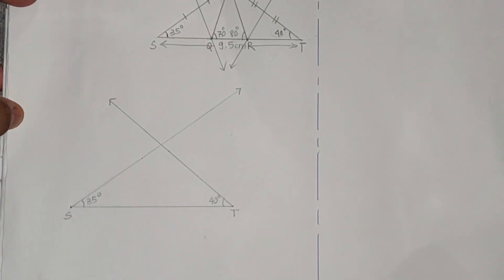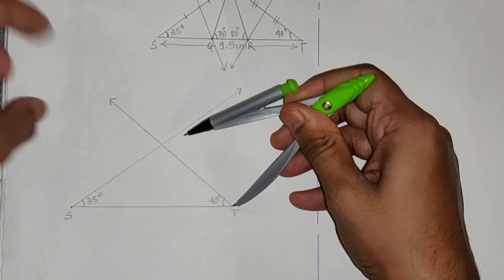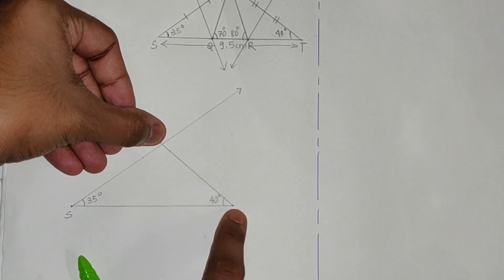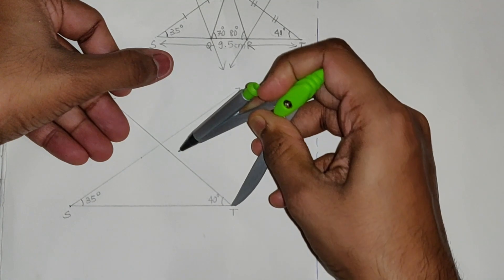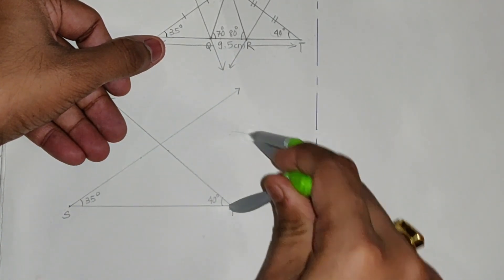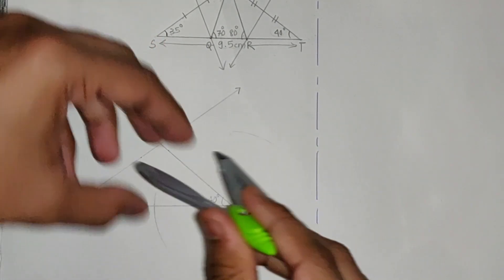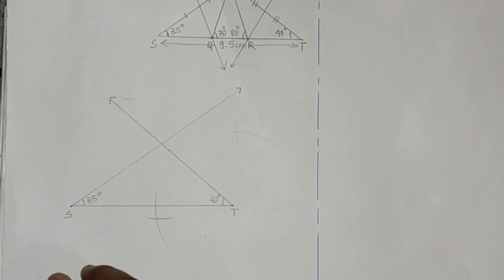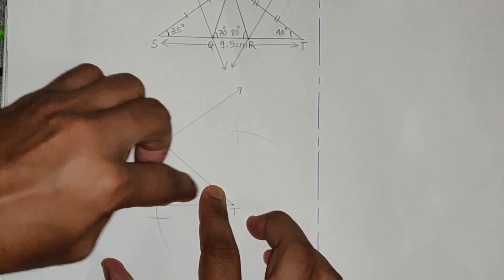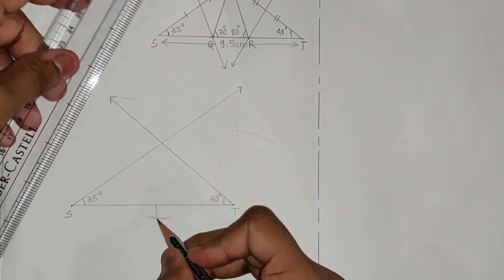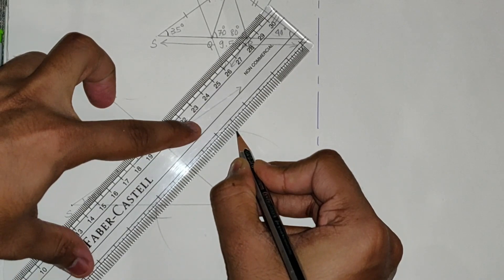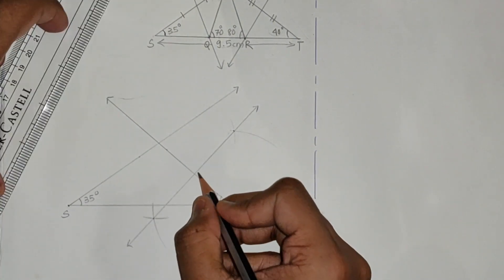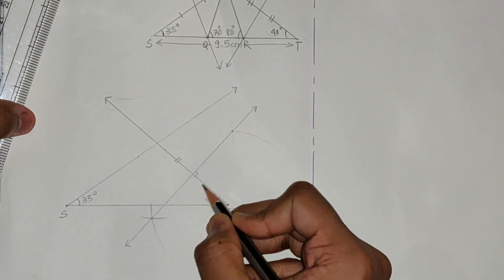Take the compass and keep it on T. Take more than half of this segment — only this much segment, not the full line. Draw arcs above and below. Then keep the compass at the other end point and draw arcs above and below. Connect the two arc intersections to get the perpendicular bisector. This gives a 90° sign and these two sides are equally divided.